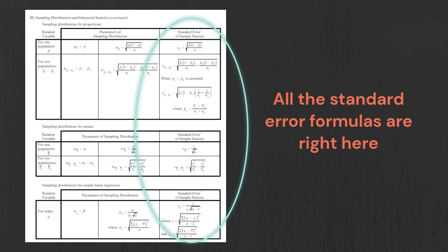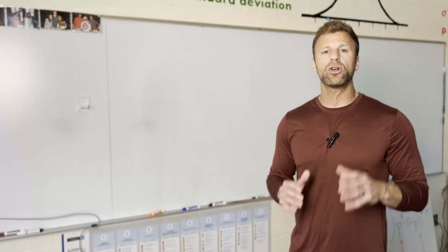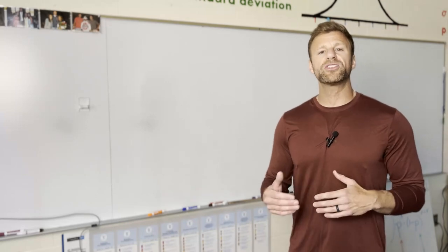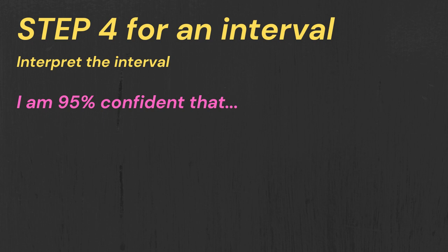And then the fourth step to a confidence interval is make sure you interpret the interval. This is where you start off by saying, hey, I'm 95 percent confident that the true population proportion of people that recycle is somewhere between 30 and 40 percent. But make sure you write that again in context.